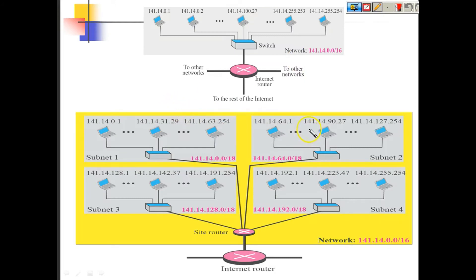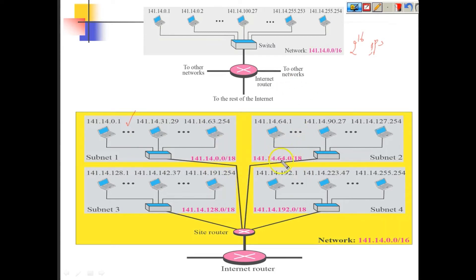Now this is what is actually required. There is a larger block having 2 power 16 IPs, and a company wants to divide these IPs into four smaller blocks so that the smaller blocks can be allocated to different departments and can be effectively managed. So 2 power 16 IPs are to be divided into four blocks — they can be equal or unequal size, but in this example we assume four equal-size blocks.